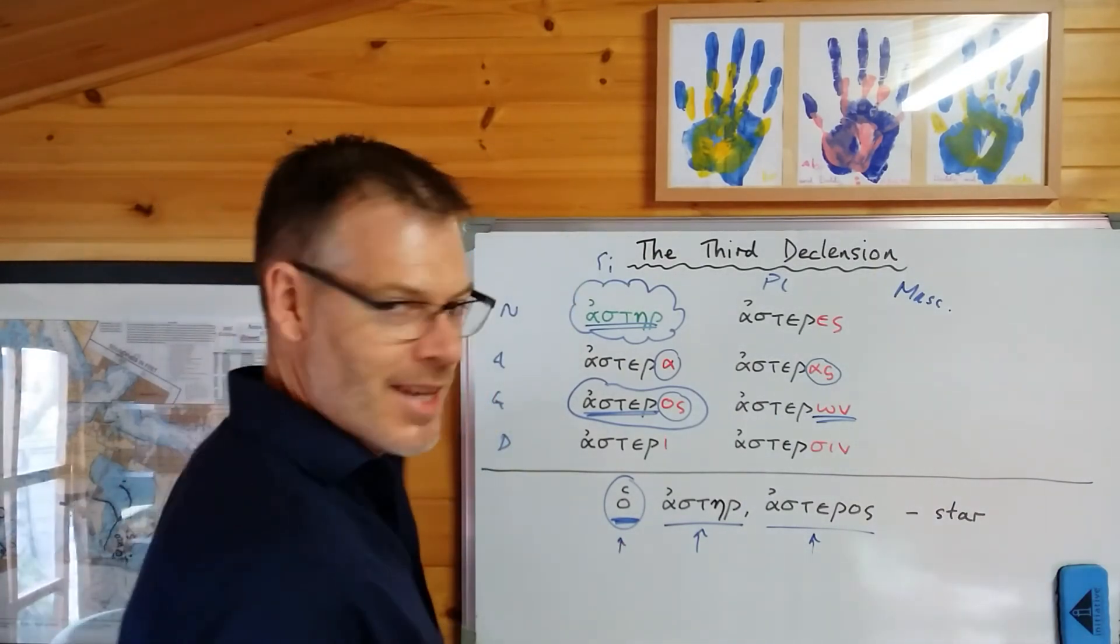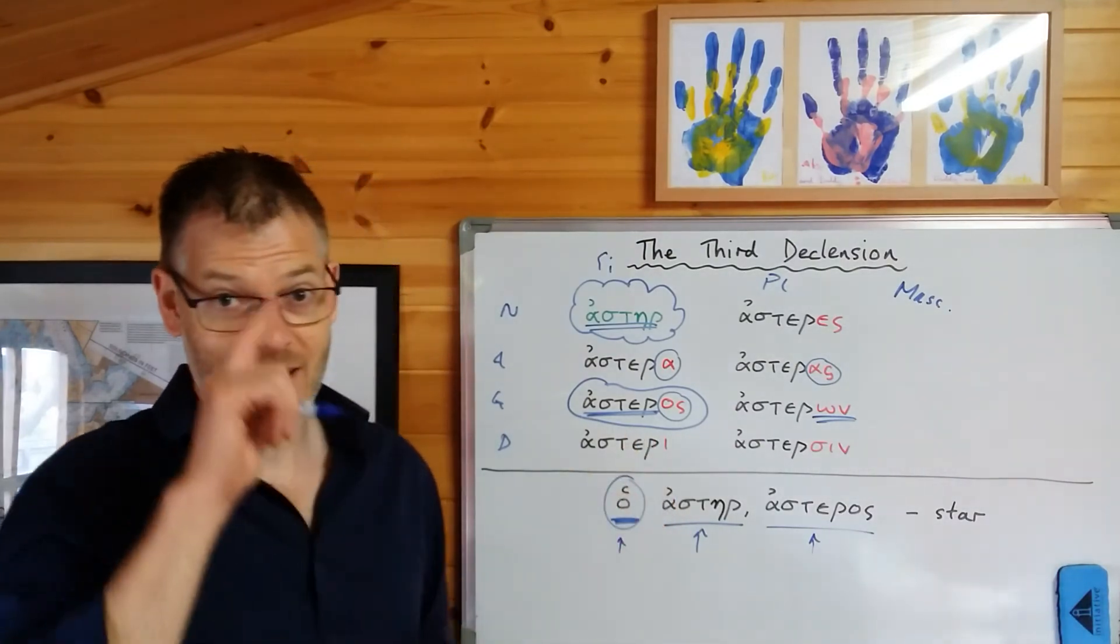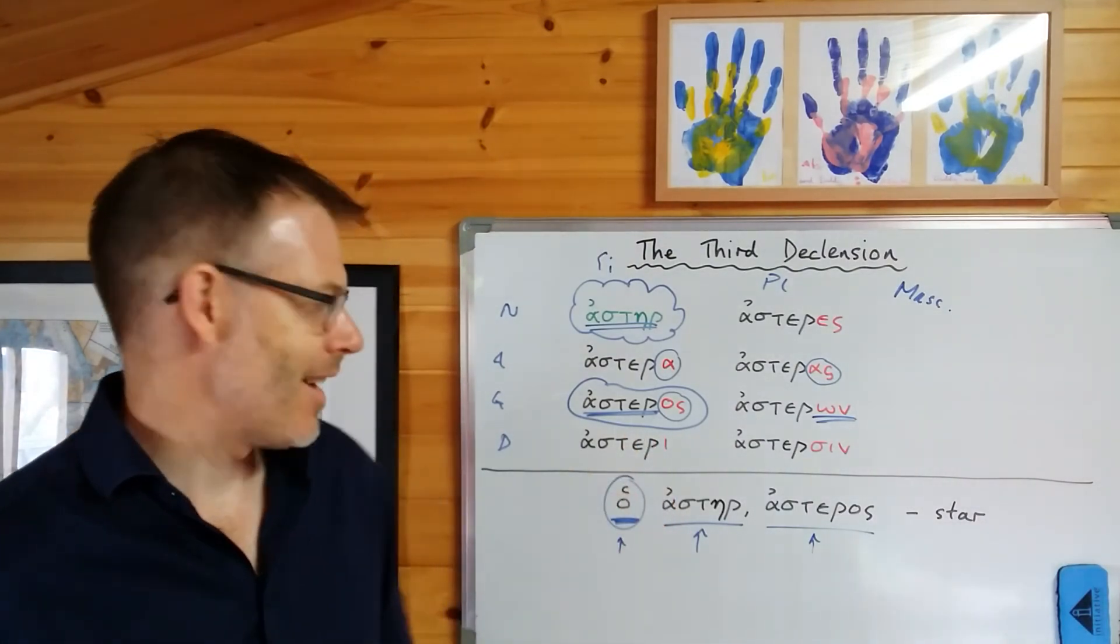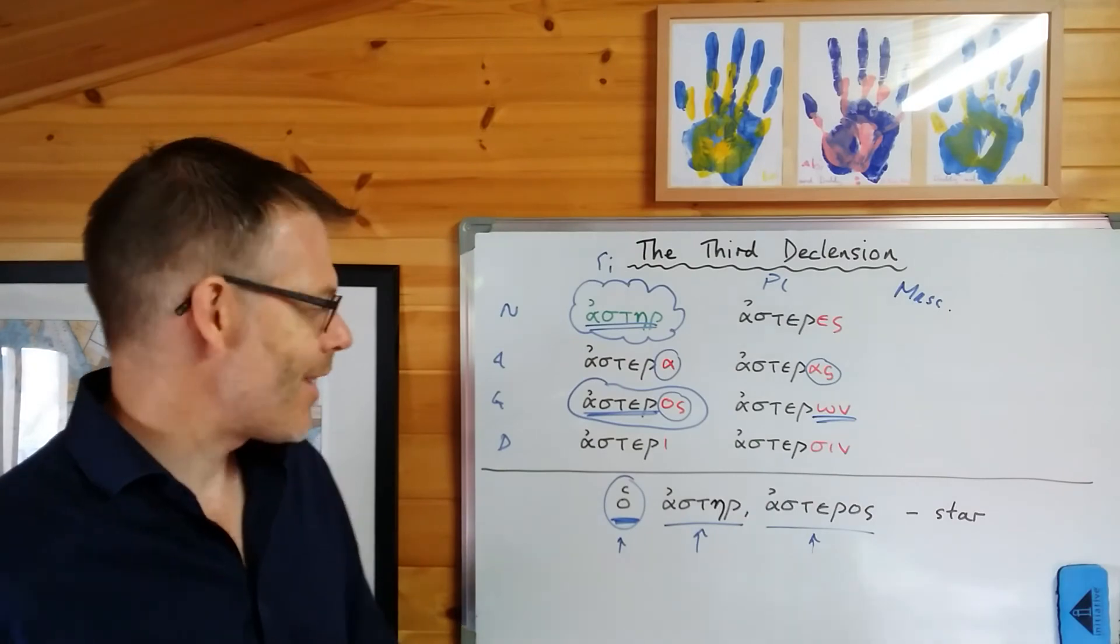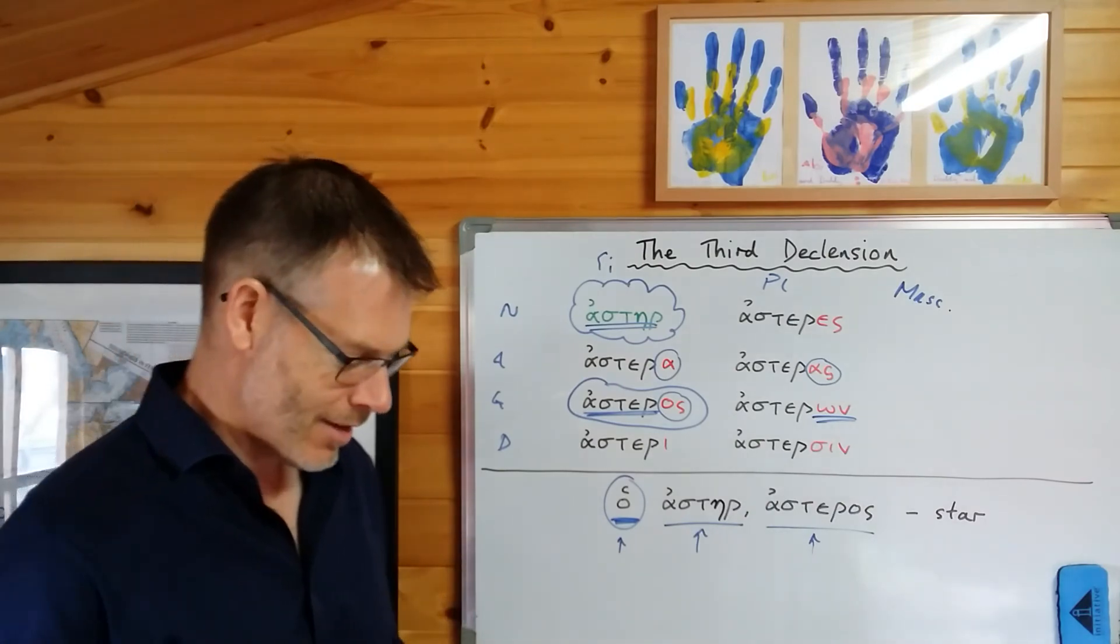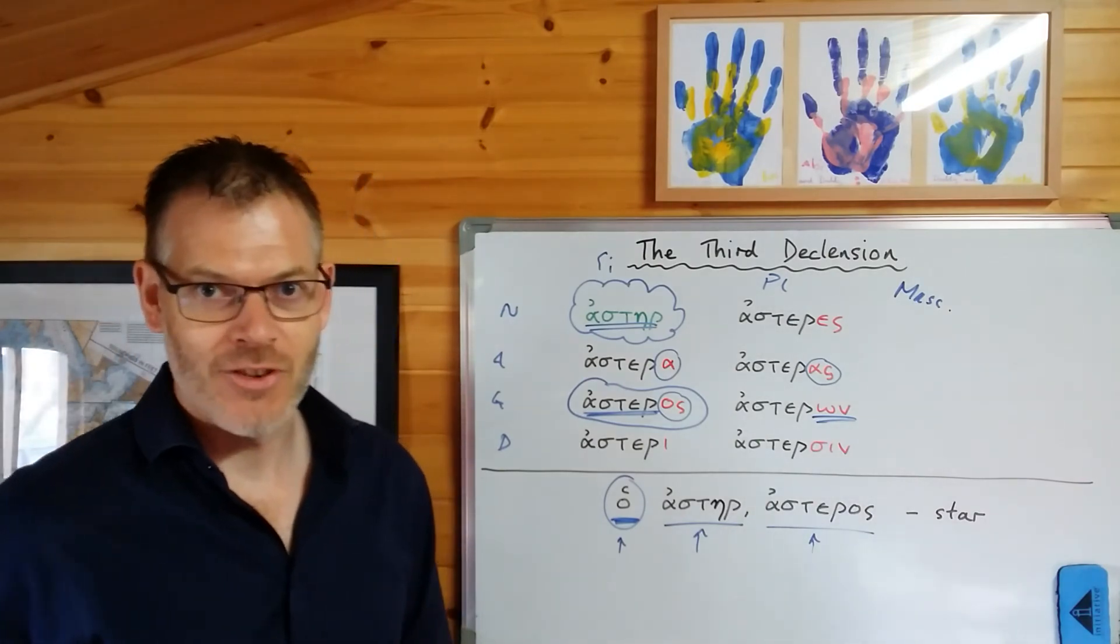In fact, the genitive singular is the same ending in neuter nouns in the third declension, so you definitely, definitely need to know the article, and therefore the gender, in order to learn the nouns.